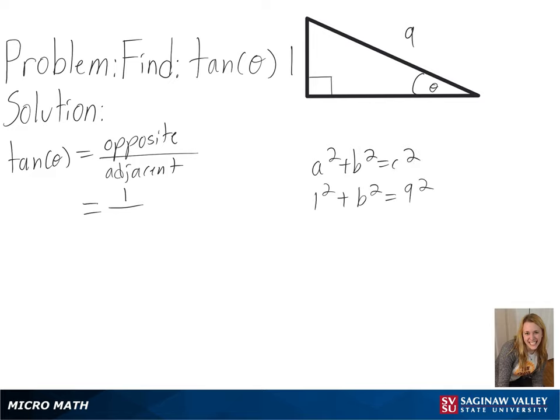And plugging in 1 for a and 9 for c, we will get the square root of 80 for b, or 4 times the square root of 5 as the length of our adjacent side.